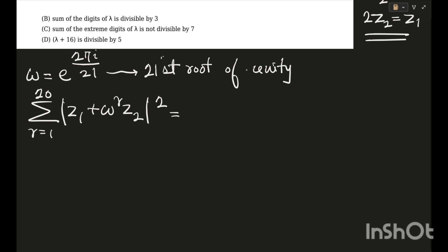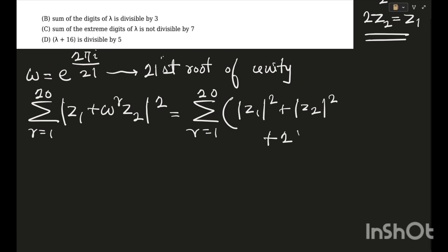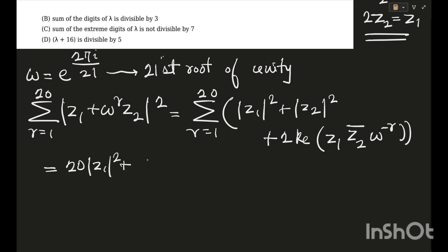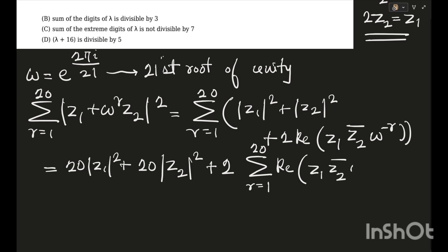The first thing to do is square this up. Squaring gives sigma r = 1 to 20 of: mod z1 squared + mod z2 squared + 2 times the real part of z1·z2_conjugate. Because of z2_conjugate, this last term will involve ω^(−r). Since mod z1 and mod z2 squared are constant, summing r = 1 to 20 gives 20·|z1|² + 20·|z2|² + 2 times sigma r=1 to 20 of Re(z1·z2_conjugate · ω^(−r)).